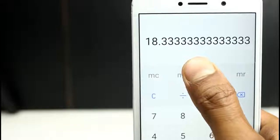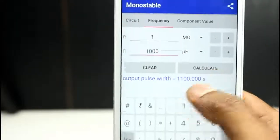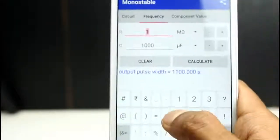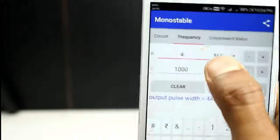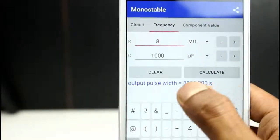So you will get the minutes. You can get 18 minutes by using one mega ohm resistor and thousand microfarad capacitor. If you use four mega ohm, in that case you will get 4400 seconds.